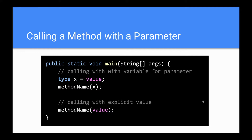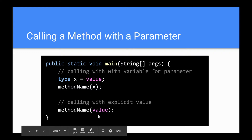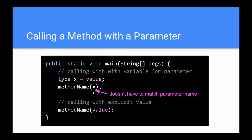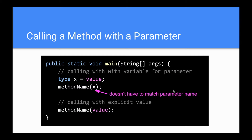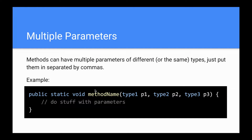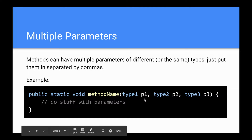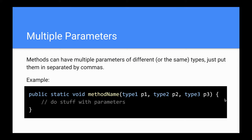Calling a method with a parameter: you can call it with a variable for the parameter, like type x equals value and then method name x. Or you can call it with an explicit value — if the type was int, this would be method name 2. The name of the parameter you pass doesn't have to match the parameter name from the method declaration. You can have multiple parameters of different or the same types, separated by commas in the method declaration: type1 parameter1, type2 parameter2, type3 parameter3. Inside the braces, you use those parameters however you need to.